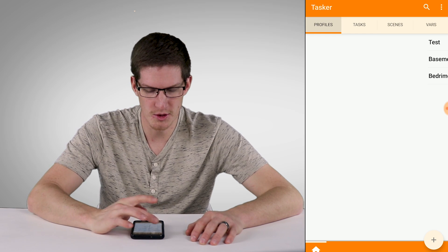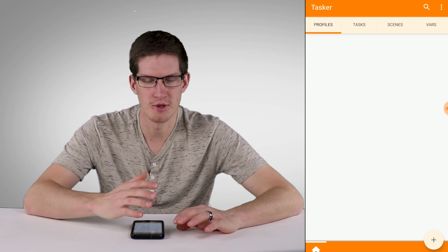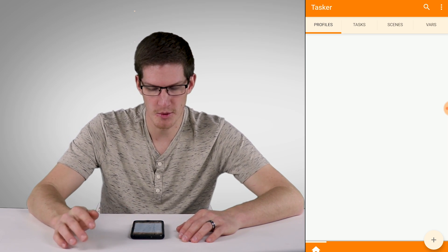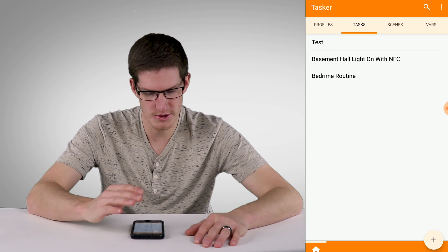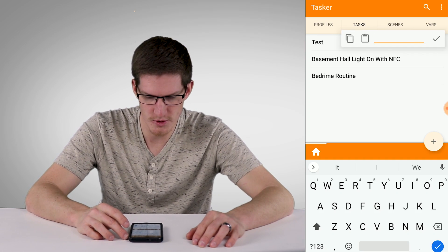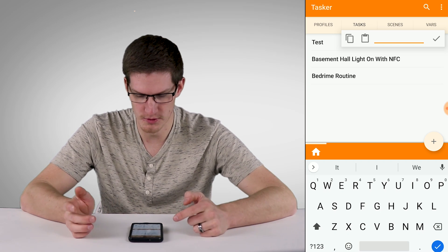Now, if you've ever used Tasker in the past, you typically would set up a profile, which is basically setting up something to trigger something else to trigger a task. But we're not going to be using profiles at all. We're just going to be using tasks. So in Tasks, in Tasker, we're going to go ahead and add a new one, and we'll name it. I have one called Bed Rhyme Routine here. I meant to say bedtime.